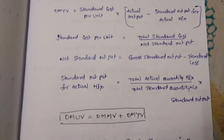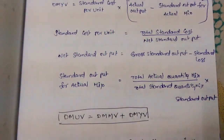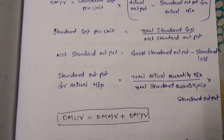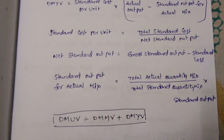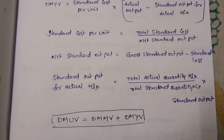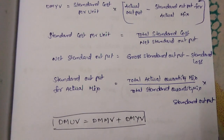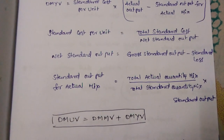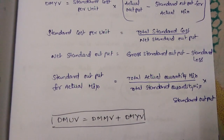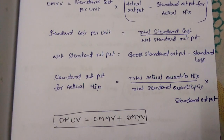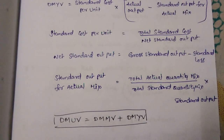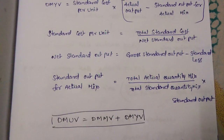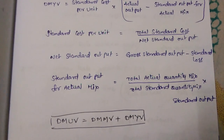The relationship is: Direct Material Usage Variance equals Direct Material Mix Variance plus Direct Material Yield Variance. That is, DMUV = DMMV + DMYV.